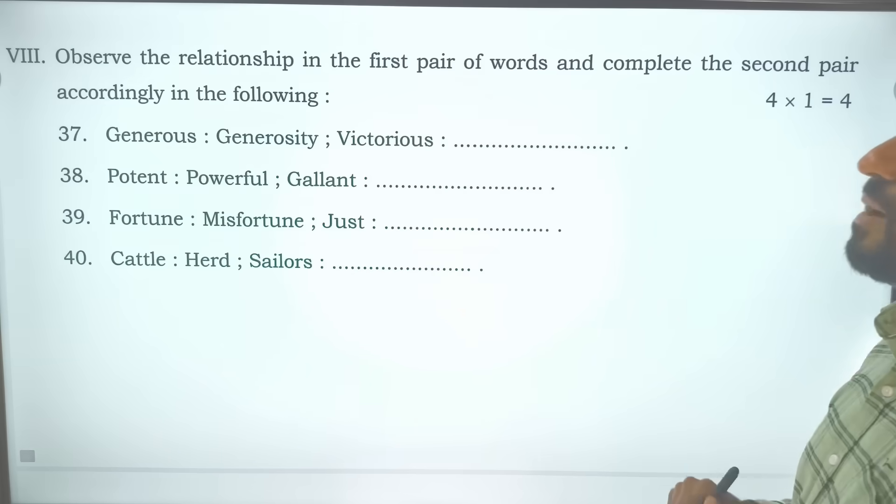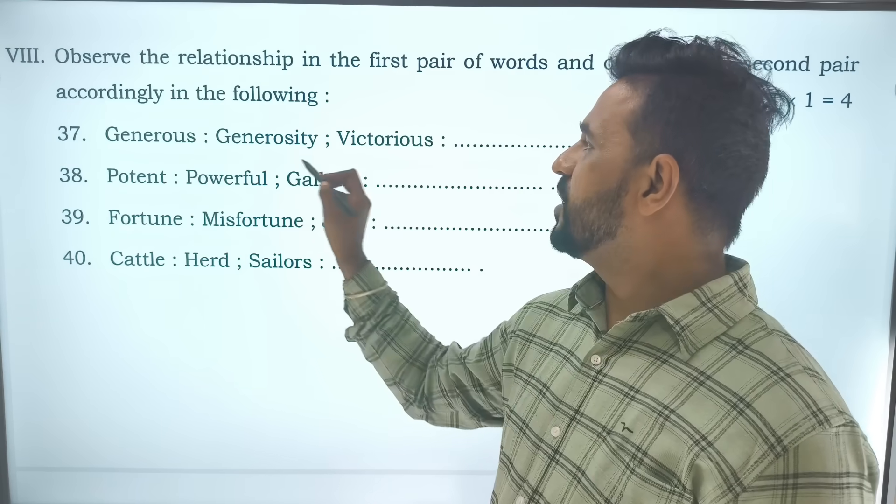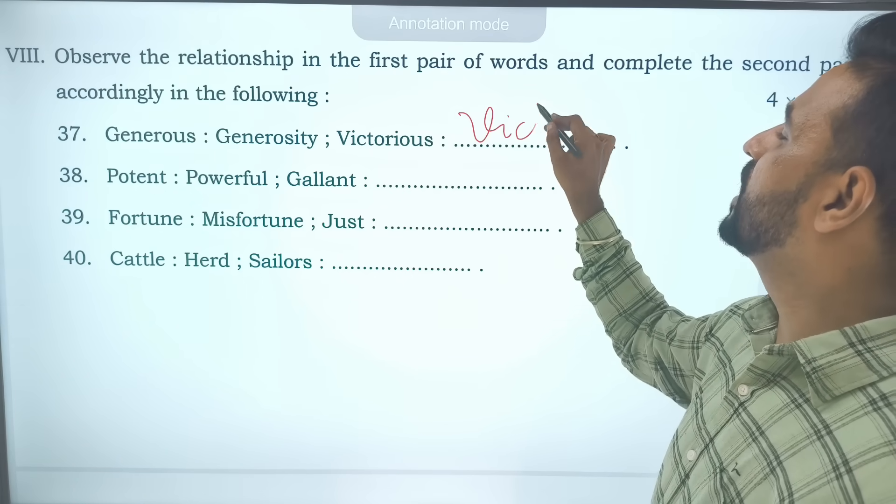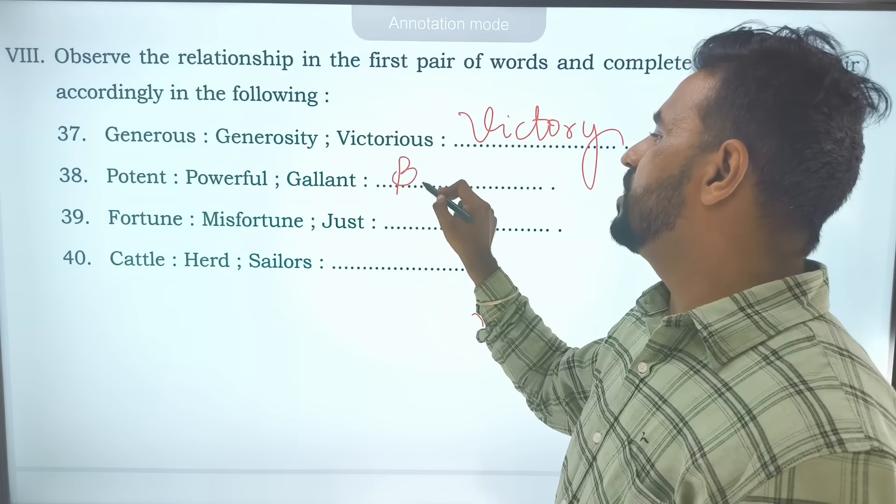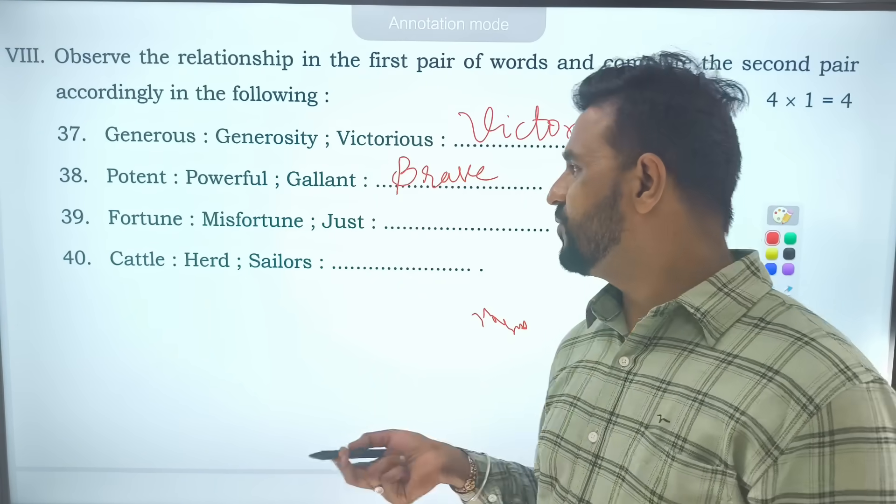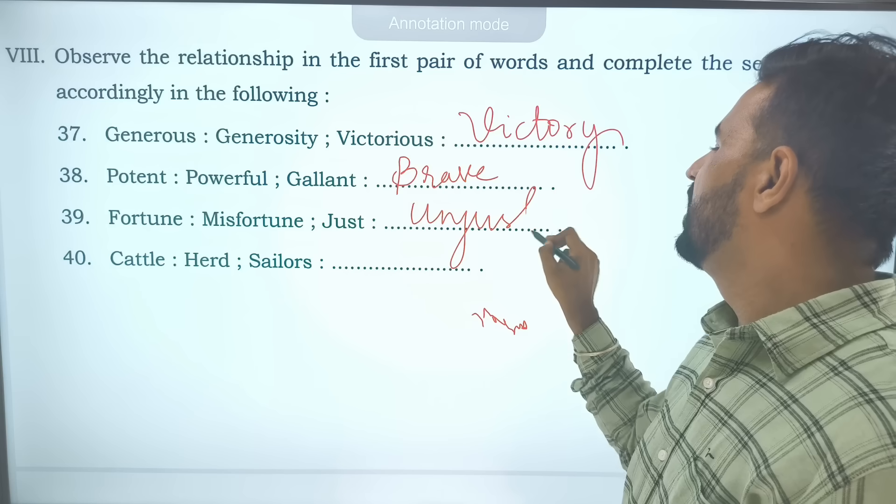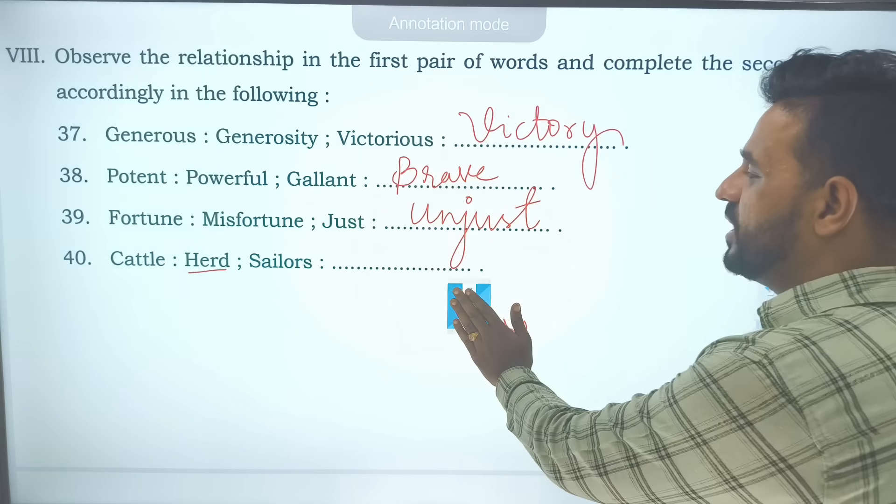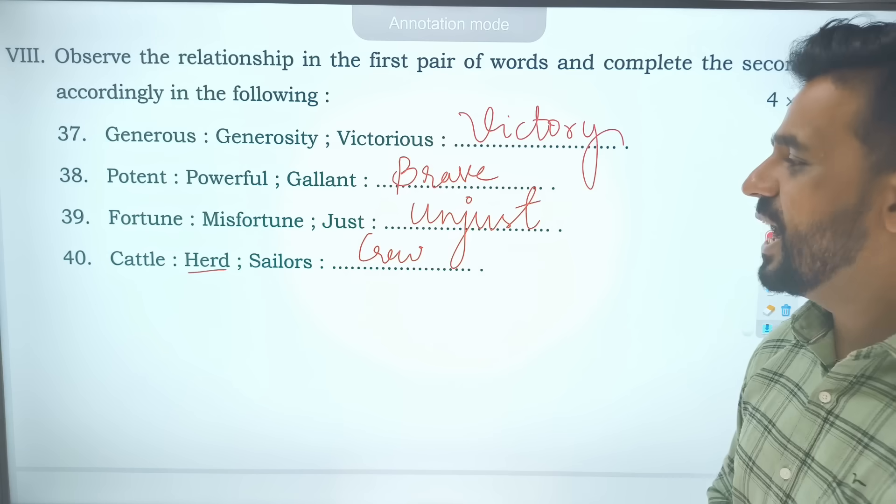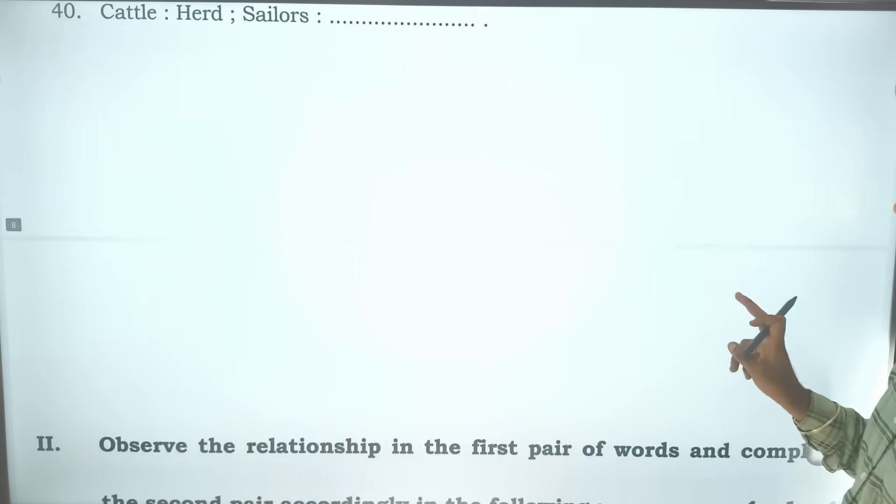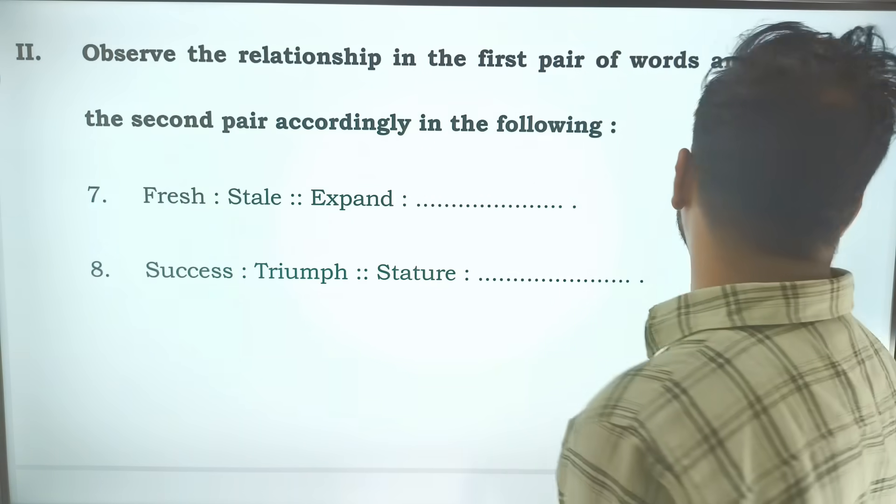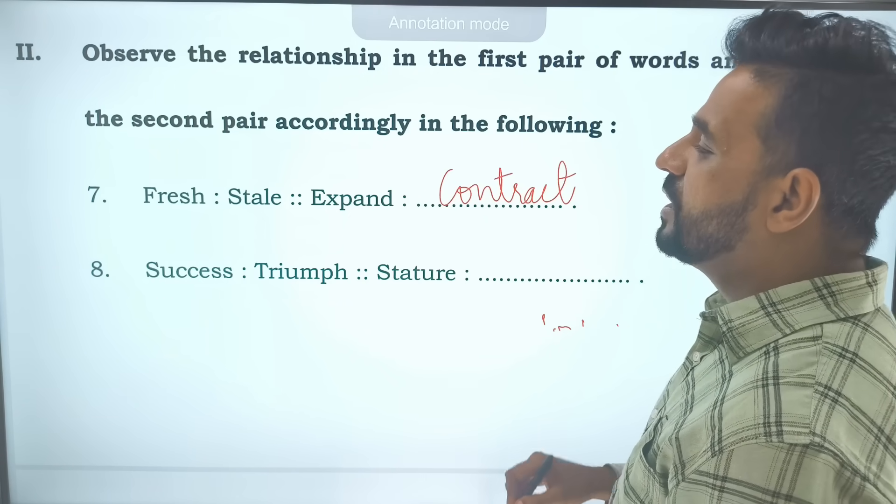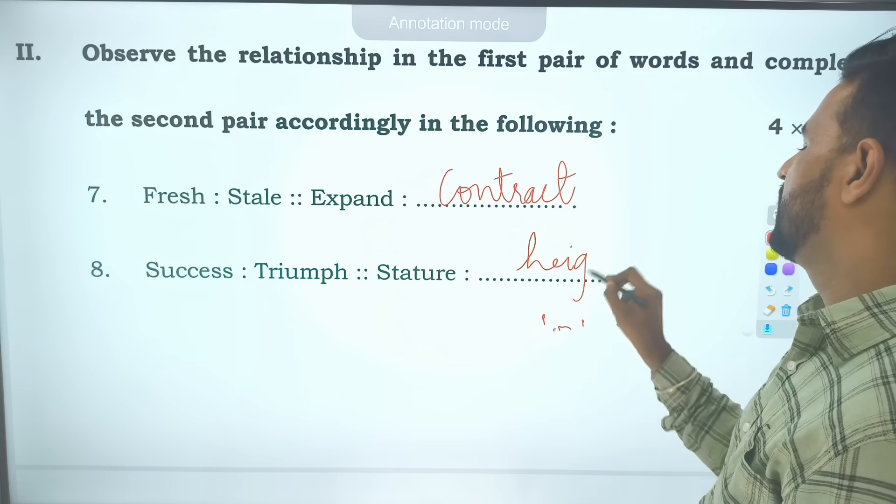This is the last part I will be discussing. Generous will become generosity. Victorious will become victory. Potent means powerful. Gallant means brave. Fortune will become misfortune. Just, it will become unjust. Similarly cattle, group of cattle we call it herd. Group of sailors we call it crew. I hope there are again one set of questions.